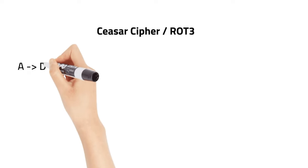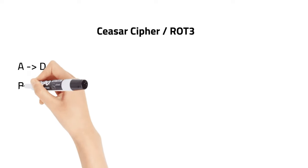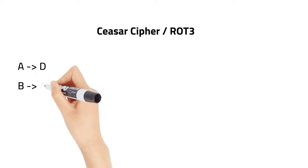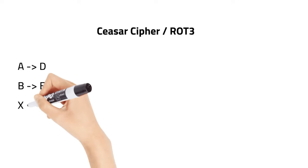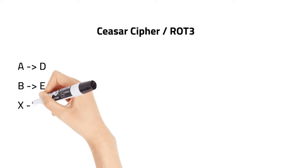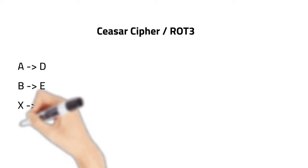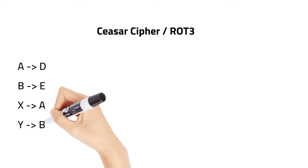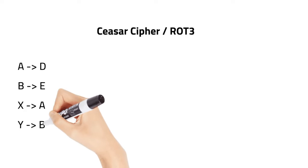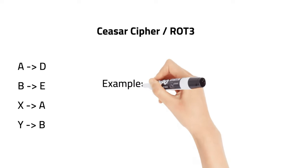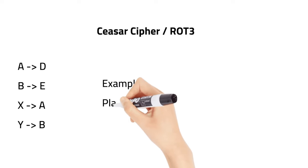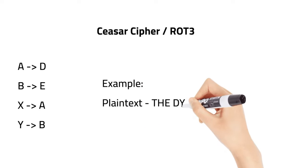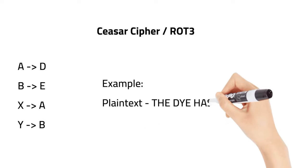So X becomes A, Y becomes B, and Z becomes C. Here I have given one example. Our plaintext message is 'The die has been cast' and our ciphertext is 'W kh glh kdv ehhq fdvw'.